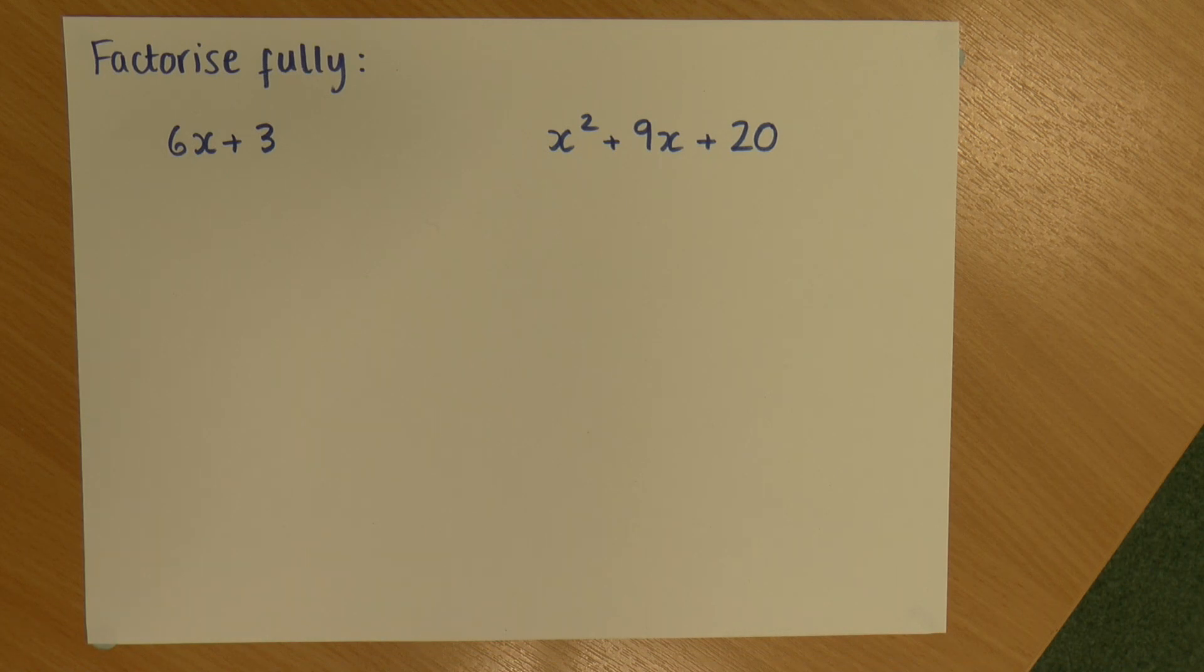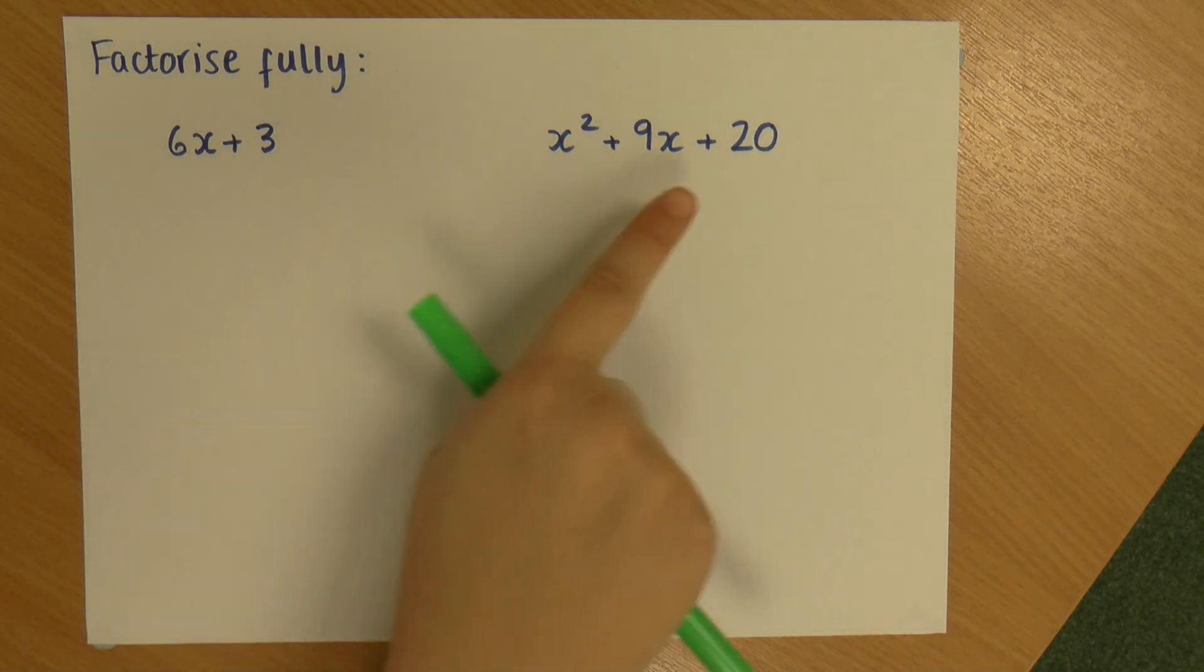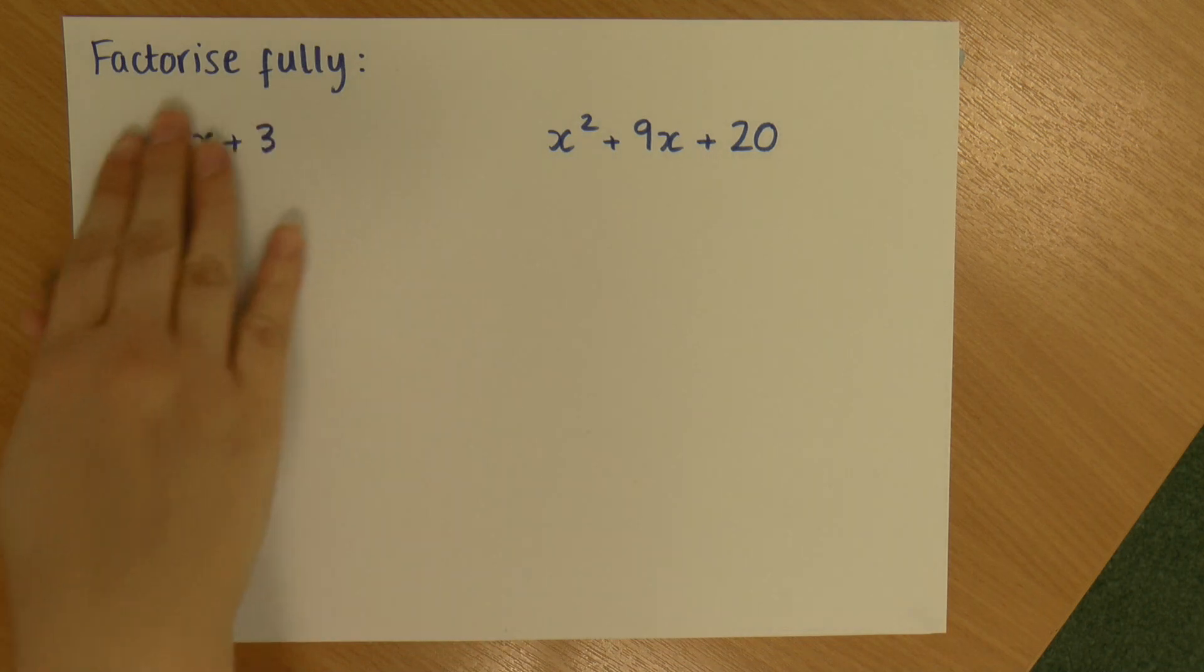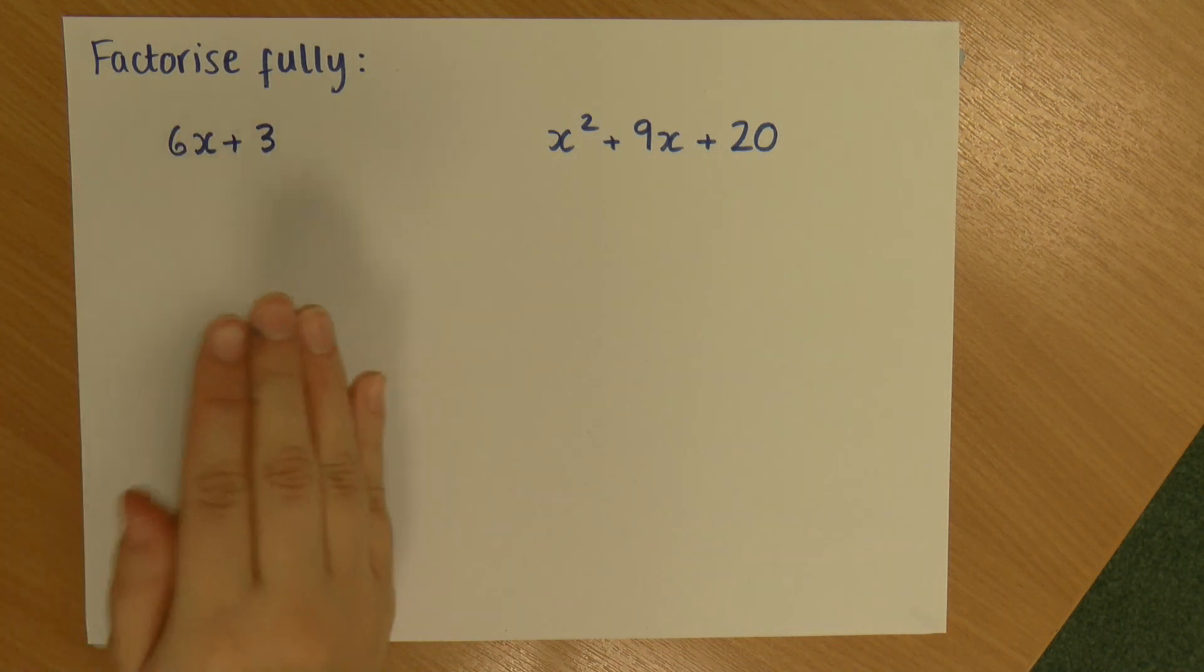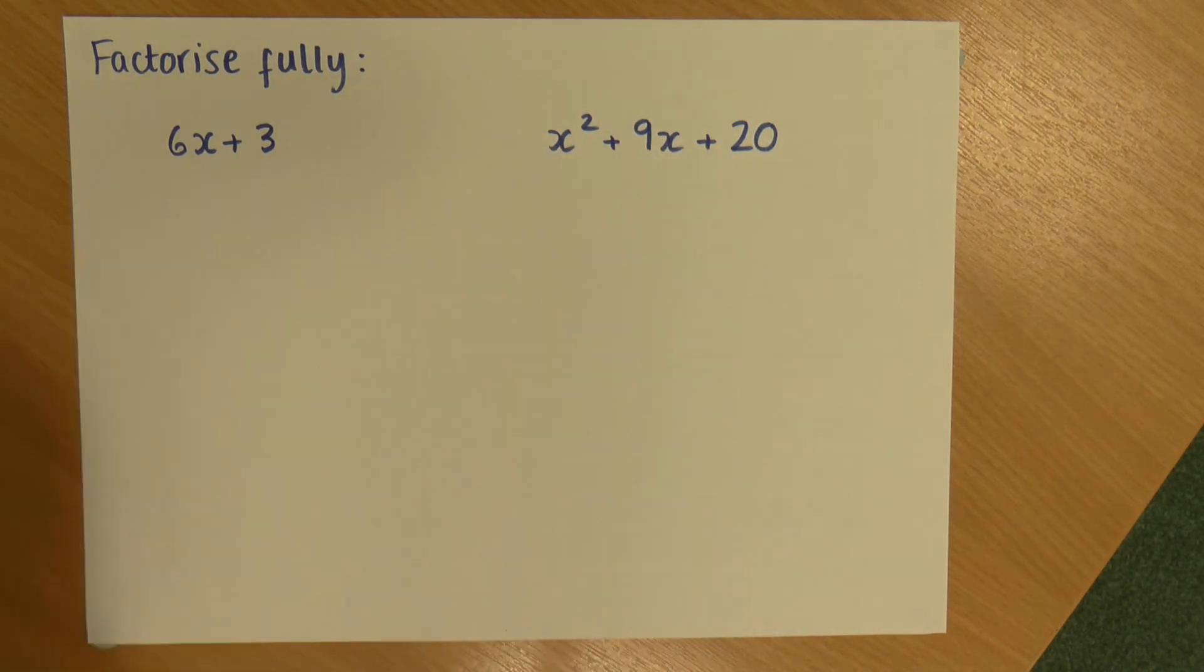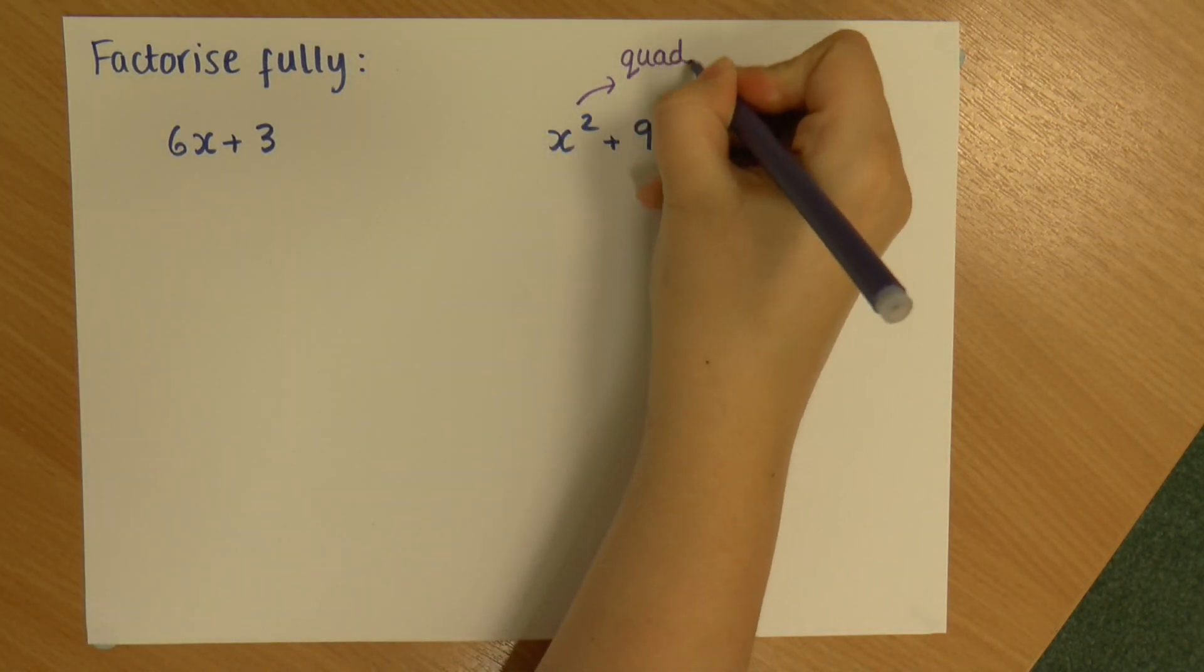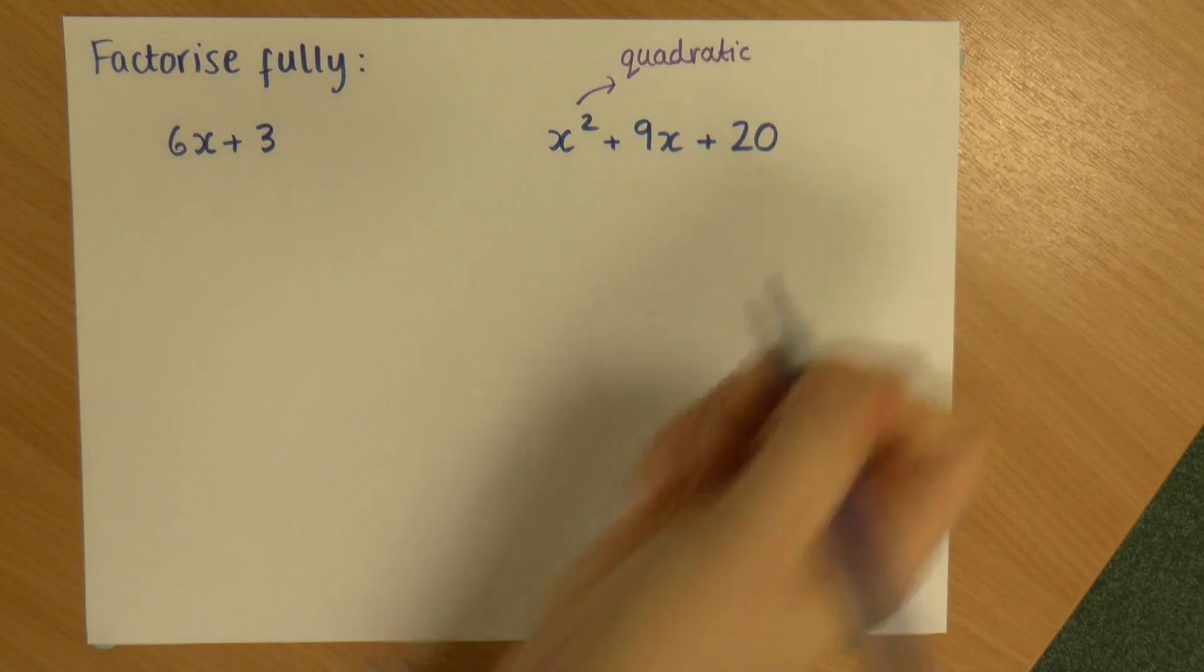Hi, this is Rachel and we're going to look at factorising. So we have two expressions here that we are being asked to factorise fully. So I'm going to start with this one on the left. Now when we have something that looks like this, and by like this I mean not a quadratic. So this one on the right has an x squared that makes it a quadratic equation.